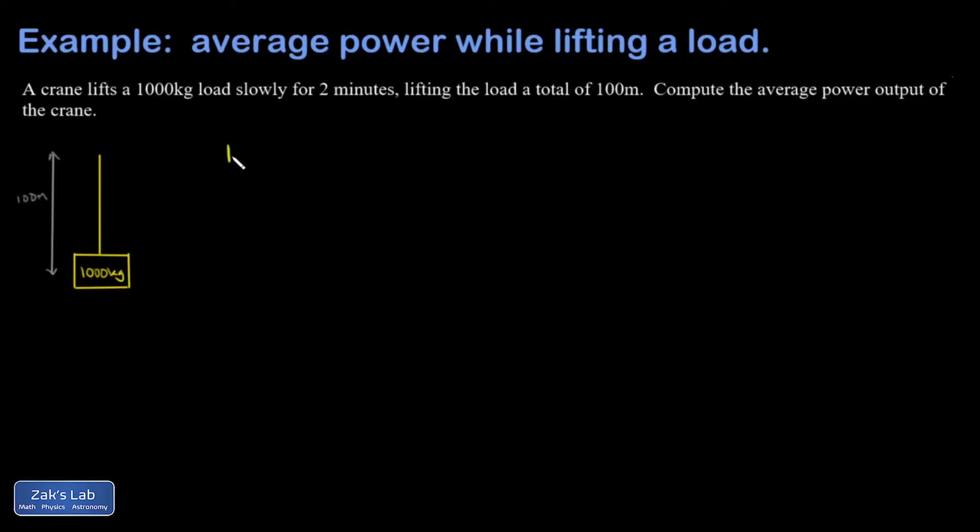So power is just how much work is done divided by how long it took. And the units of power, the units of work are going to be joules. So it's units of work divided by the units of time. So it's going to be joules per second, and this gets a special name. It's called a watt.